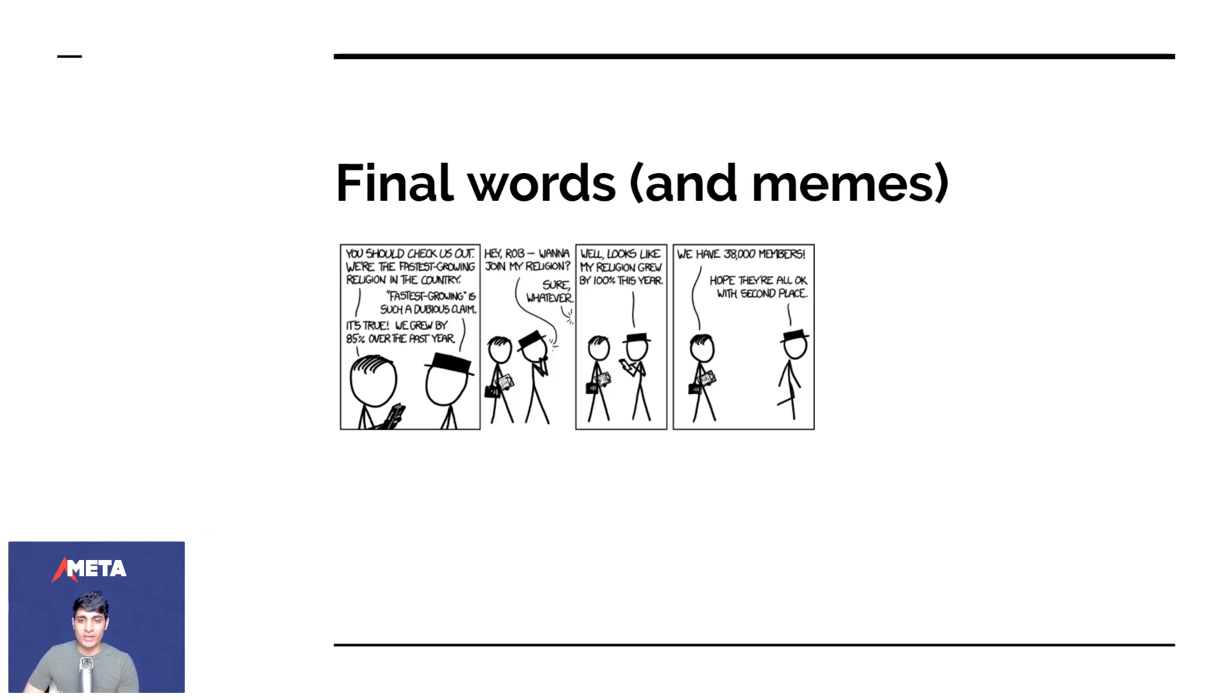Someone says, 'Check us out, we are the fastest growing religion in the country.' Another person says fastest growing is such a dubious claim. The first responds, 'It's true, we grew by 85% over the last year, and 85 sounds like a big number.' Then one person asks Rob to join their religion, Rob says 'sure, whatever,' and the person says, 'Looks like my religion grew by 100% this year!' The other says, 'Well, we have 38,000 members.' And the first guy says, 'Hope they're all okay with second place.' This tells you a lot about sample size and the number of people involved.